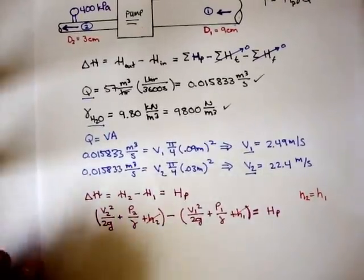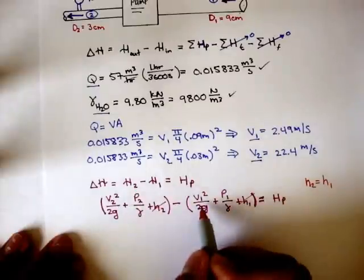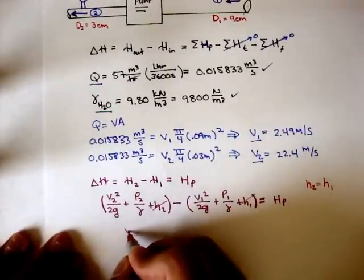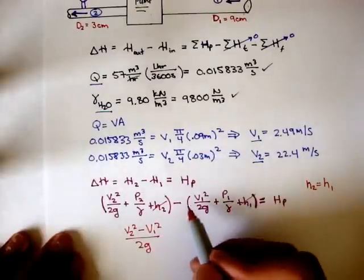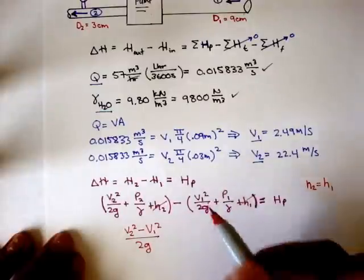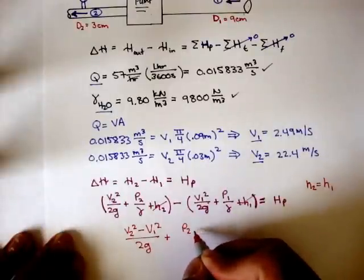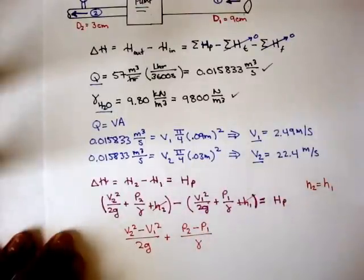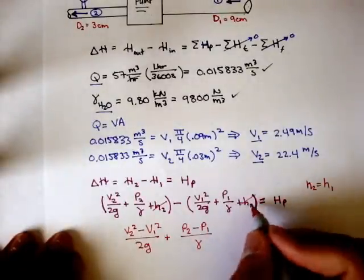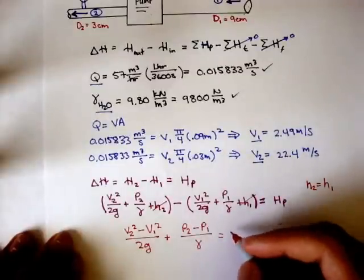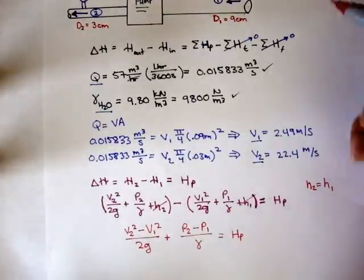Now we can rewrite this. We can combine the velocity terms: v2 squared minus v1 squared over 2g, plus pressure 2 minus pressure 1 over the specific weight of water. And that's equal to the pump head, which is what we're trying to find.